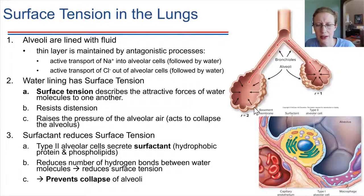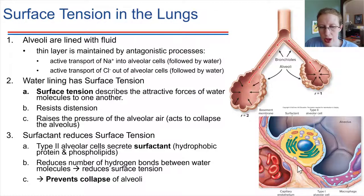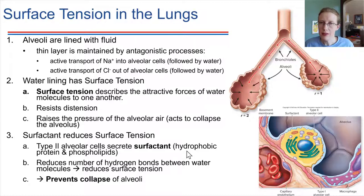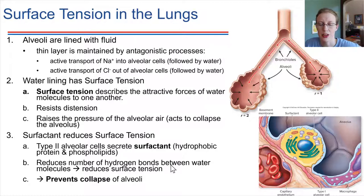There has to be something to prevent that collapse from happening — we need those air pockets to stay open so that we can breathe. This is where type 2 alveolar cells come into play yet again. In addition to maintaining the fluid environment, they also secrete something called surfactant. Surfactant is a substance that helps keep water molecules apart from each other. It's made of hydrophobic protein — built from hydrophobic amino acids — and also some phospholipids. This reduces how many hydrogen bonds can be formed by water, and therefore helps reduce the surface tension, which in the end prevents collapse of the alveoli.